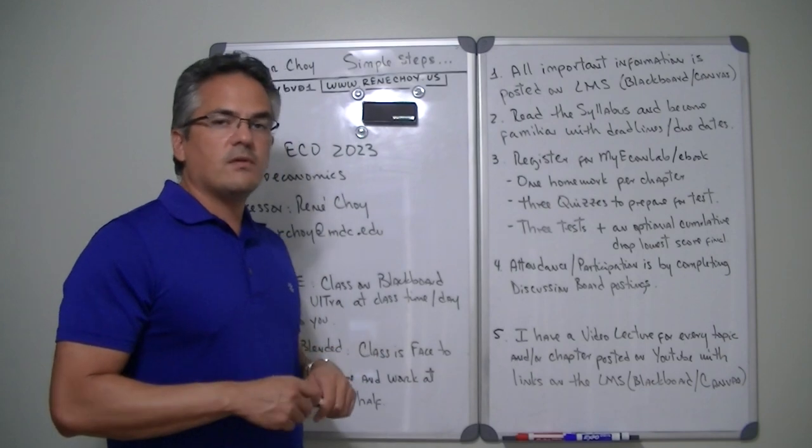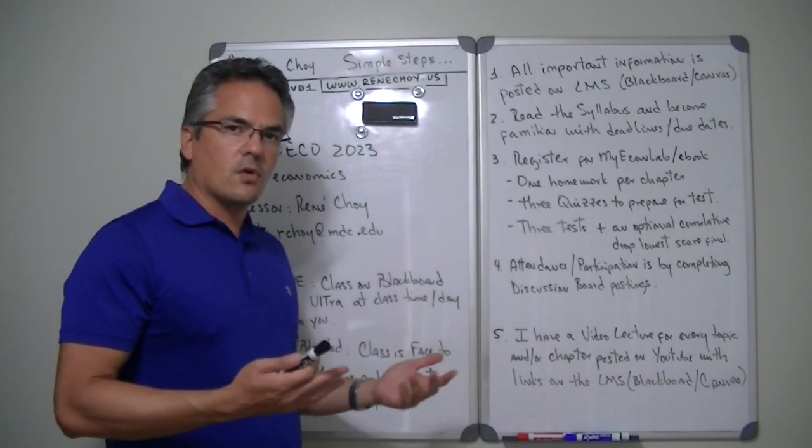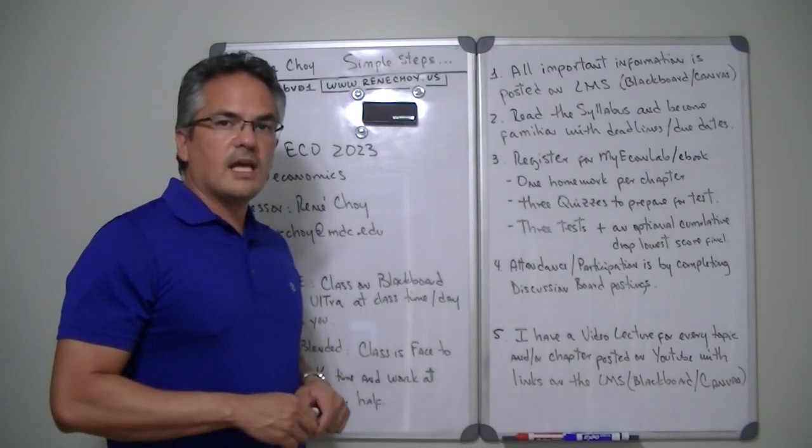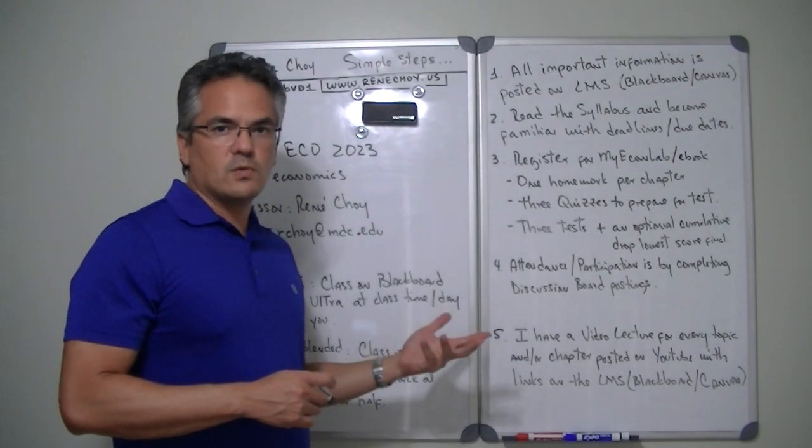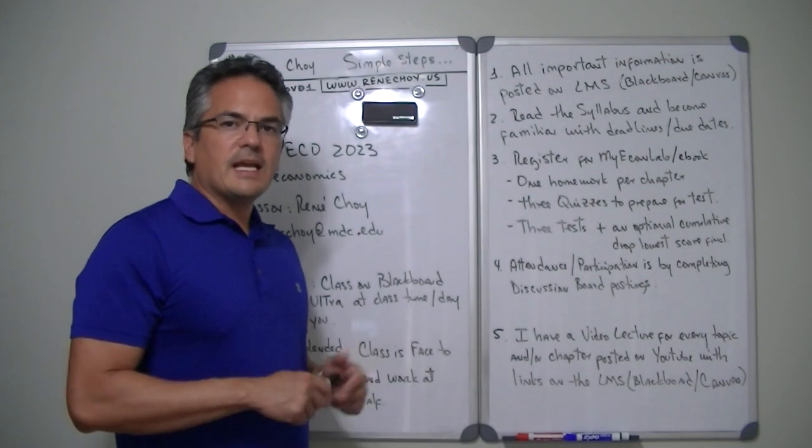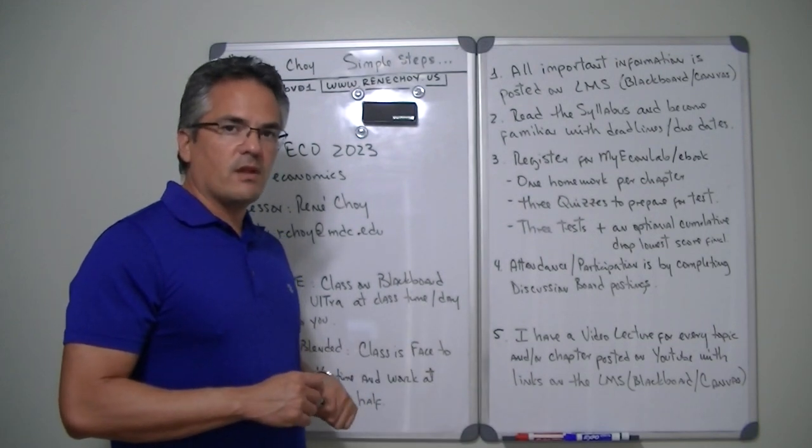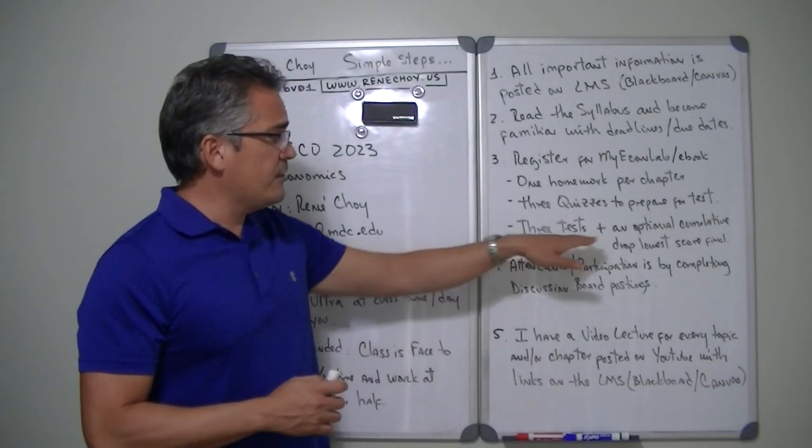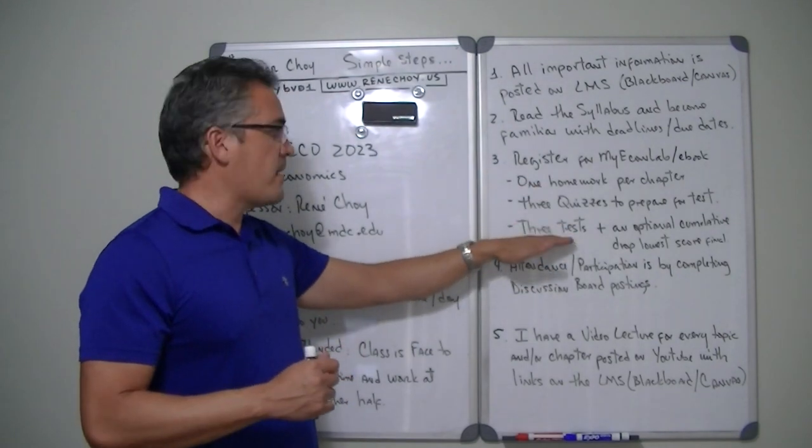Now the community final exam is for you to drop a lower score. So let's say, for example, you don't like the grade that you got on test one, two, or three, then you can take the optional final exam in order to basically cancel that grade and substitute it for that final exam. Again, if you're happy with one, two, three, then you don't have to worry about that.